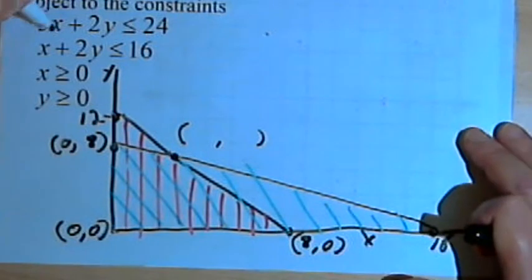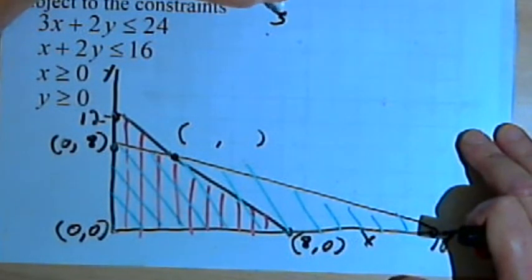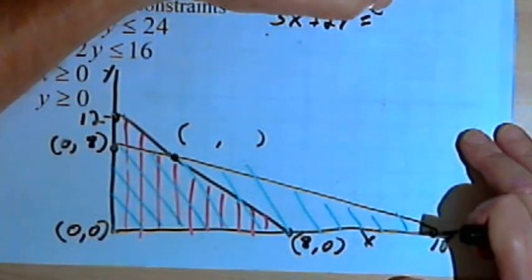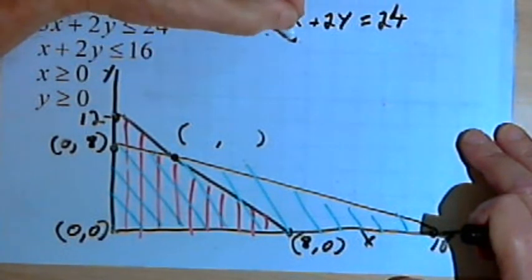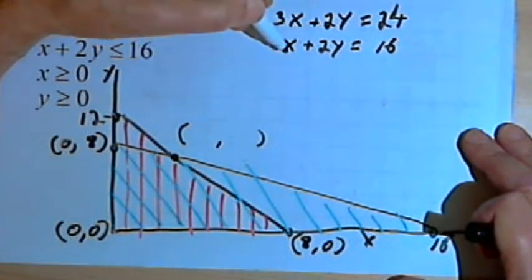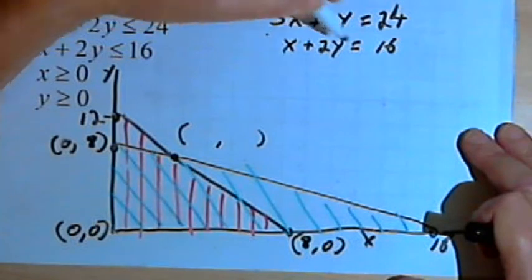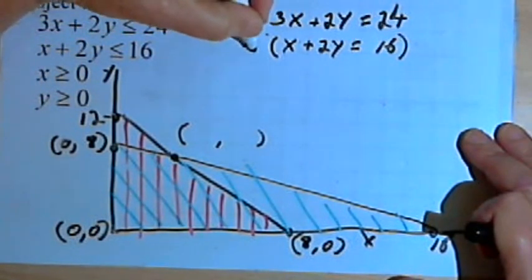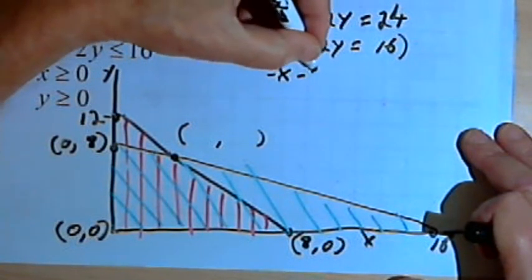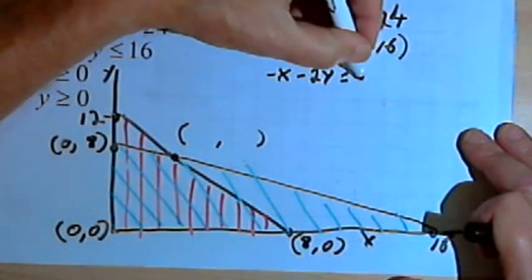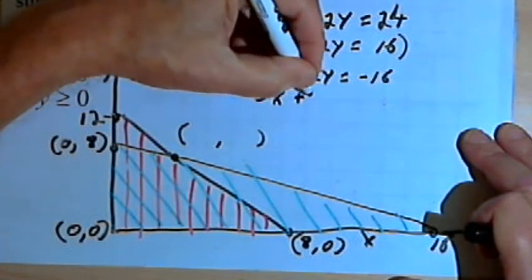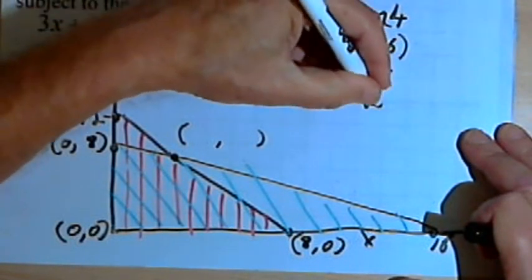So we'll take these two inequalities and deal with them as equations. I'll have 3x plus 2y equals 24, and x plus 2y equals 16. I want to solve this system of equations to find x and y. I can do that by multiplying the second equation by negative 1: negative x minus 2y equals negative 16. And I'll add the other equation to that: 3x plus 2y equals 24.